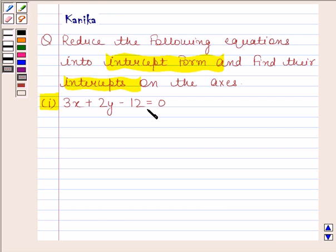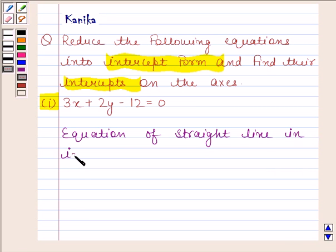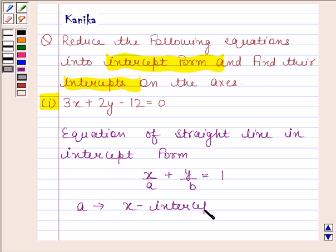First part is 3x plus 2y minus 12 is equal to 0. Now before solving this question we should know that equation of straight line in intercept form is given by x/a plus y/b is equal to 1 where a is the x-intercept and b is the y-intercept.